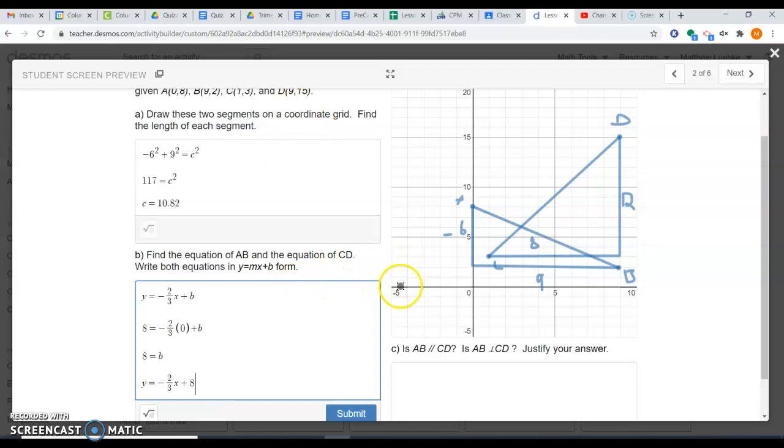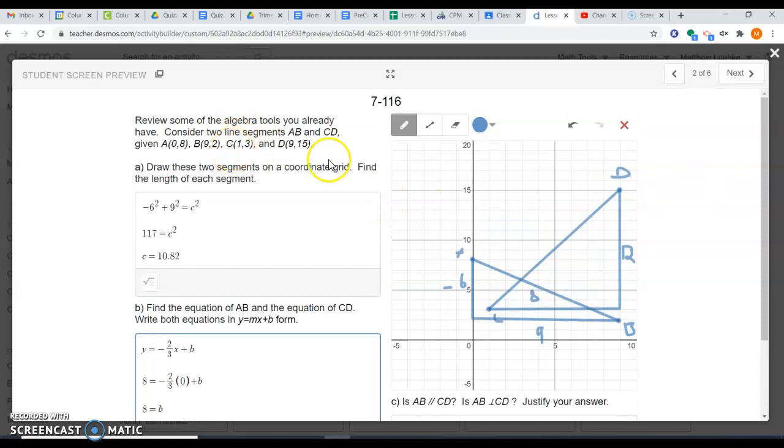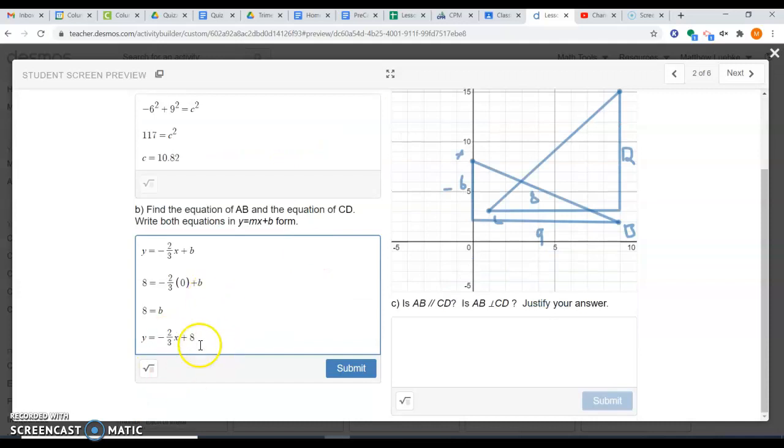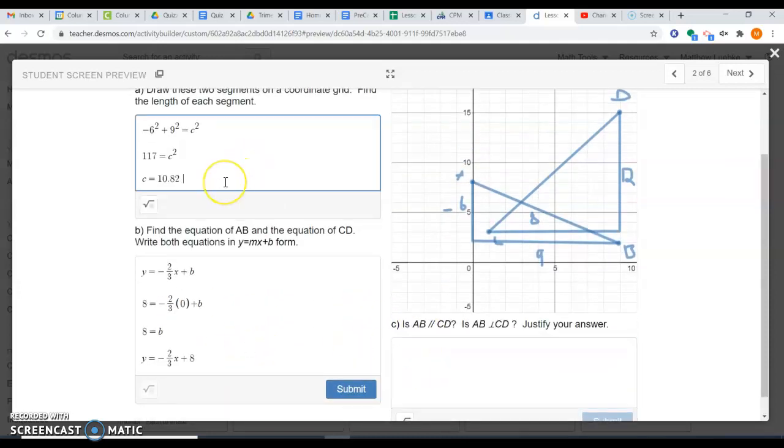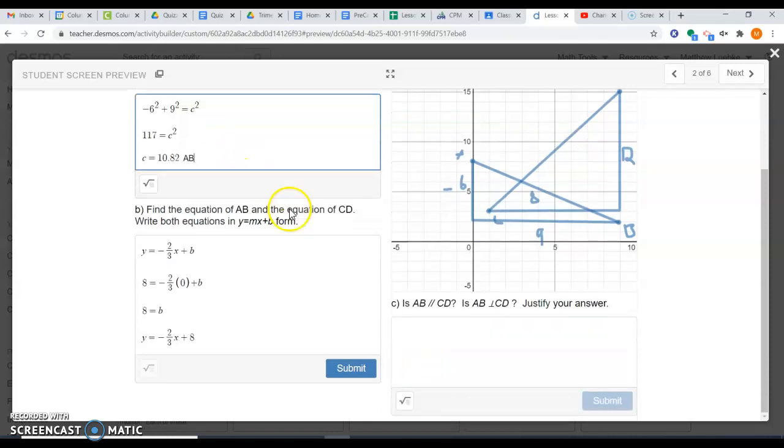Now you can write an equation for CD as well. You'll do the same thing. You'll start with a slope, which would be 12 over eight. You'll plug in a point on that line, either point C or point D, and you'll use the x and the y. You'll solve for b, and then you'll write your final equation, plugging in your slope and your b value there. You also need to find the length of CD.